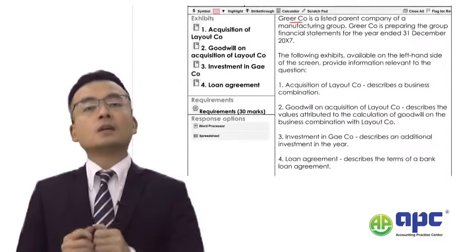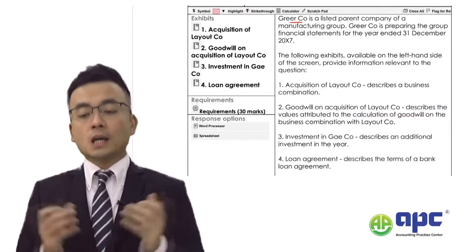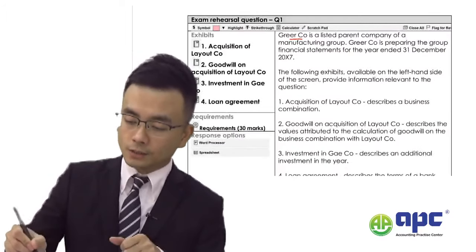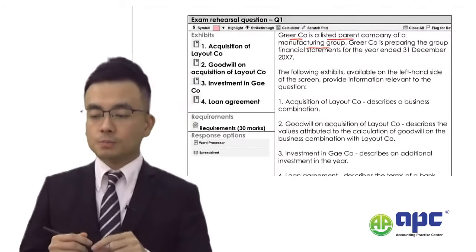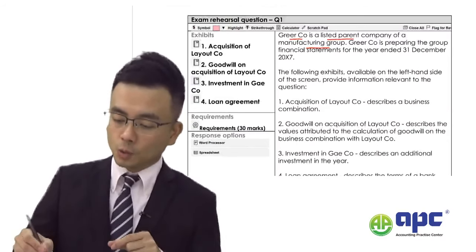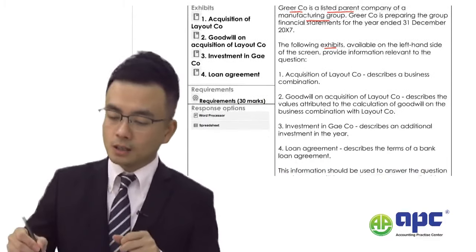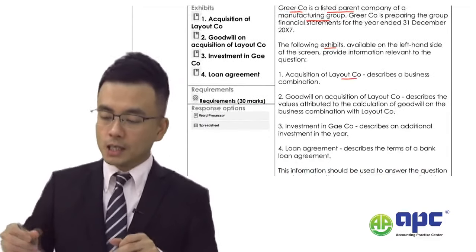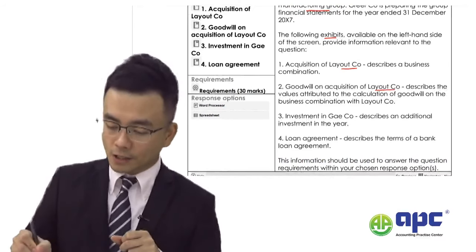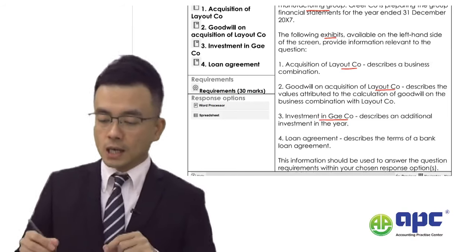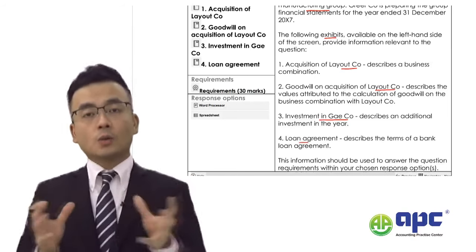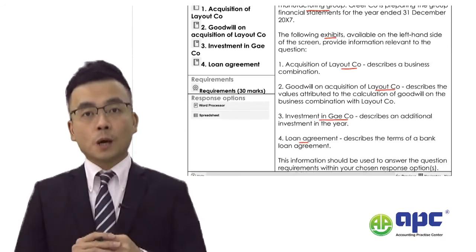Now let's see the case background. It's called the Greer company — a listed parent and a manufacturing group preparing group financial statements. We are given four exhibits: buying the layout company, goodwill related to layout, an investment in another company called G, and a loan agreement. This is why we are required to answer four parts.